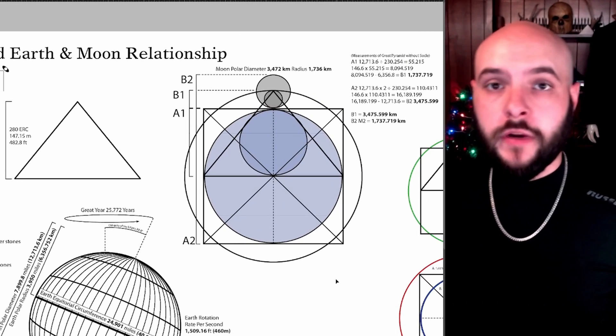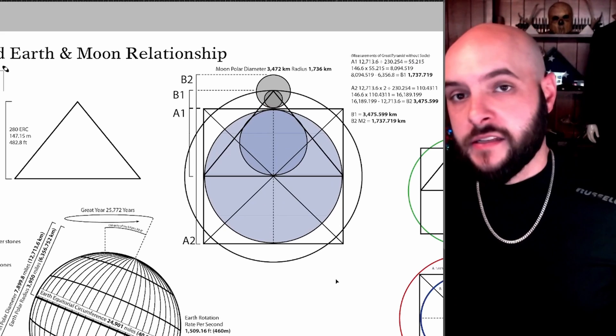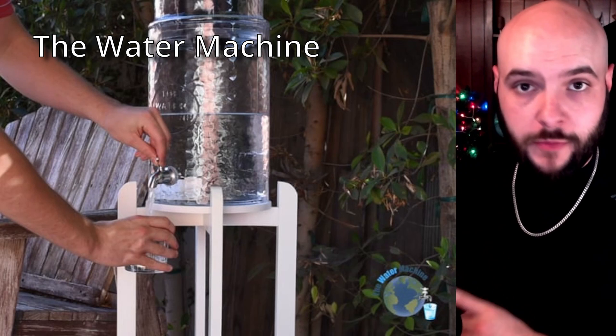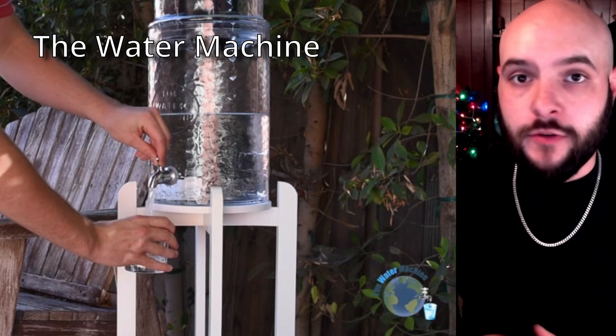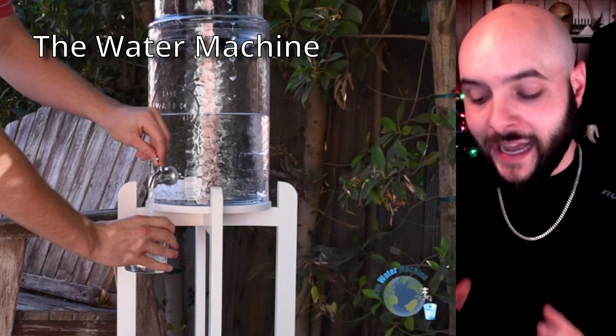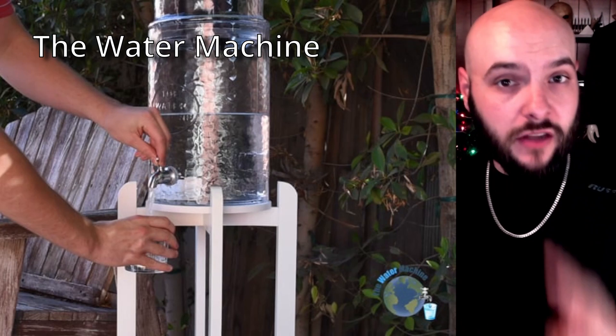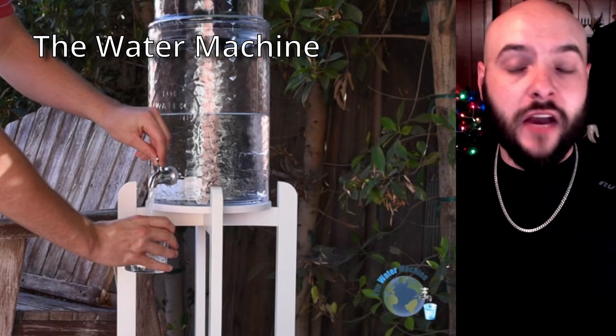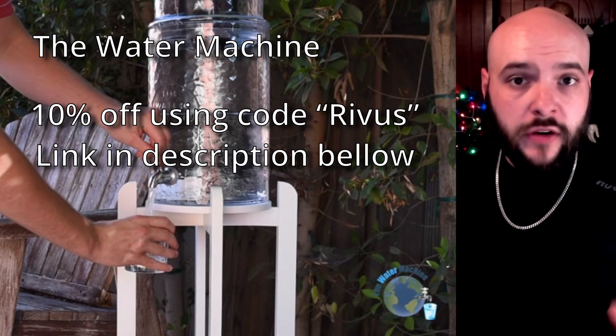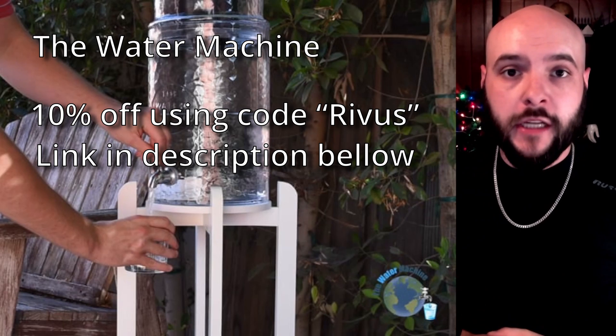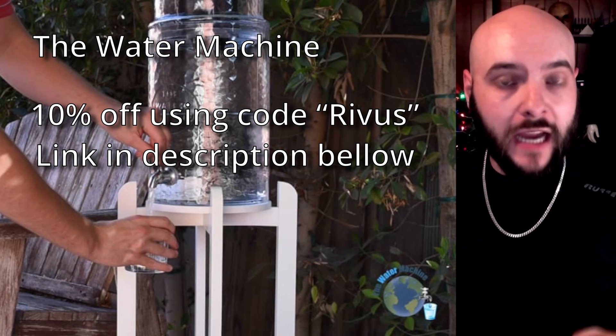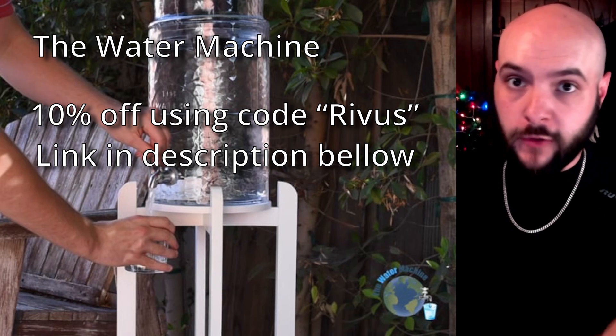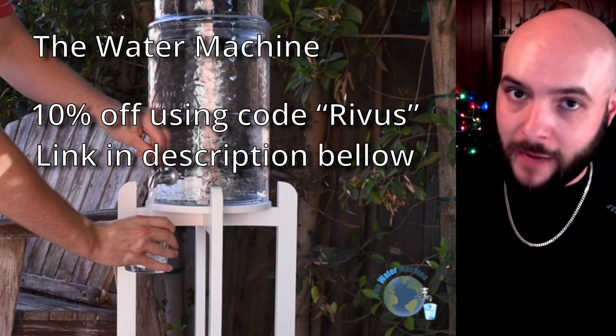And I haven't even gotten to the earth and moon ratio yet. I still have a few more things I need to do on that. But before I get to that, a quick shout out to my sponsor, The Water Machine. It's the first all glass gravity fed water purifier, and its two carbon filters will filter a gallon of water a day for 10 years. I've been using my water machine for two years now and I absolutely love it. So if you're interested, I'll put a link in the description down below and be sure to use my promo code RIVUS to get 10% off on your order, which will help me out, which will help you out, which will help the world out one drop at a time.